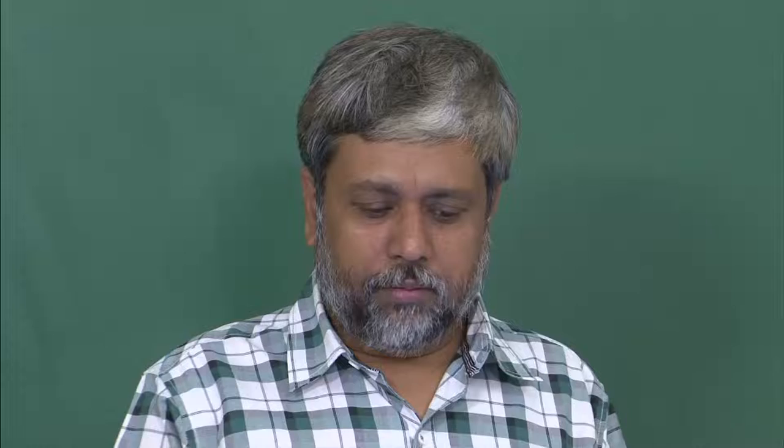But when we talk about stress, we refer to it not as having only one direction associated with it. If you consider a three-dimensional space, you have something like nine components of stress. For this kind of situation, we need a more generic abstract way of describing the system, and that will be in terms of tensors. That is what we will be doing for both stress as well as for strain.